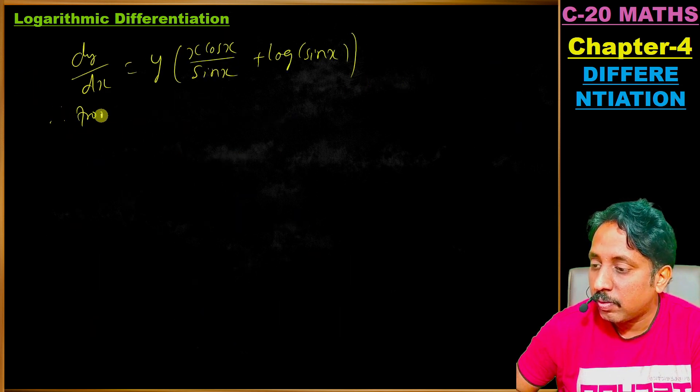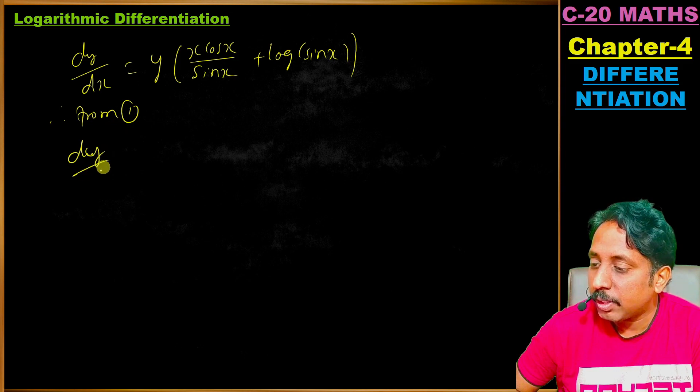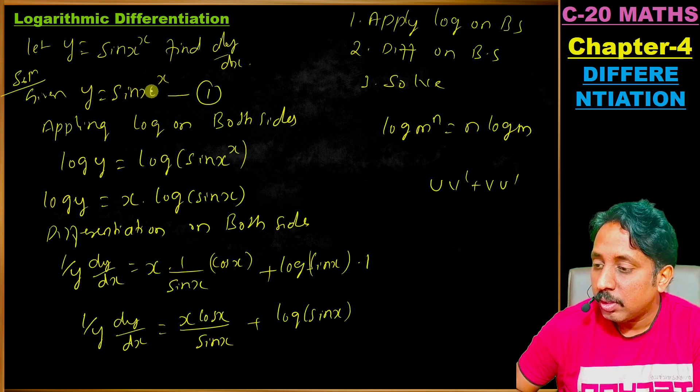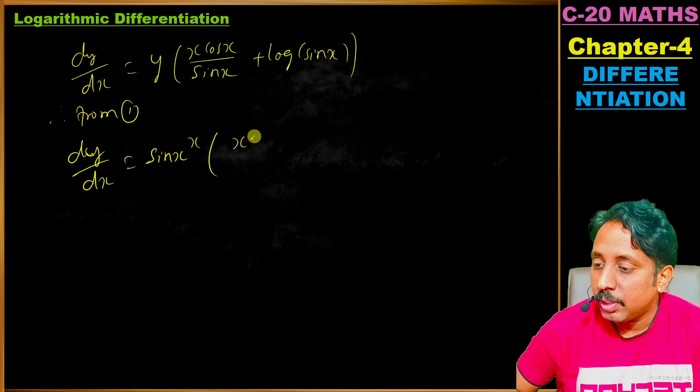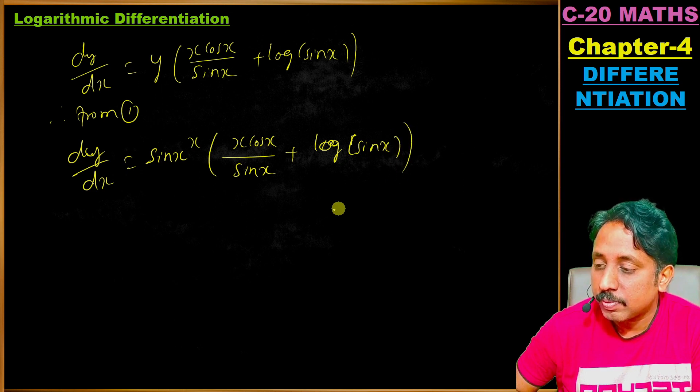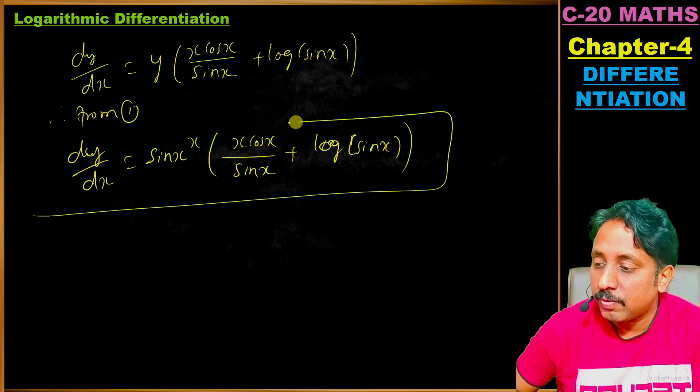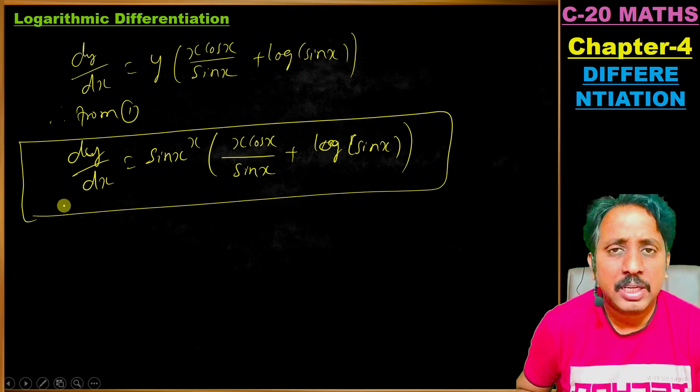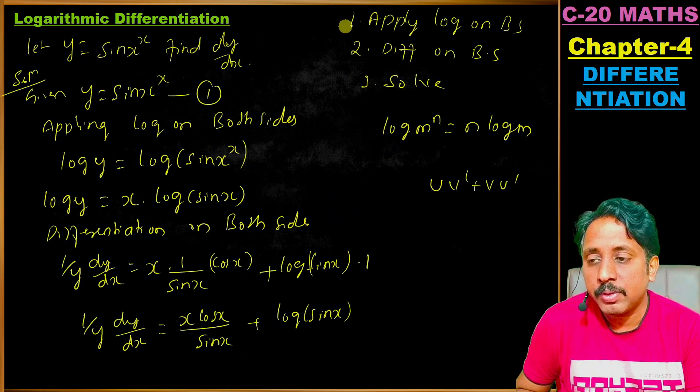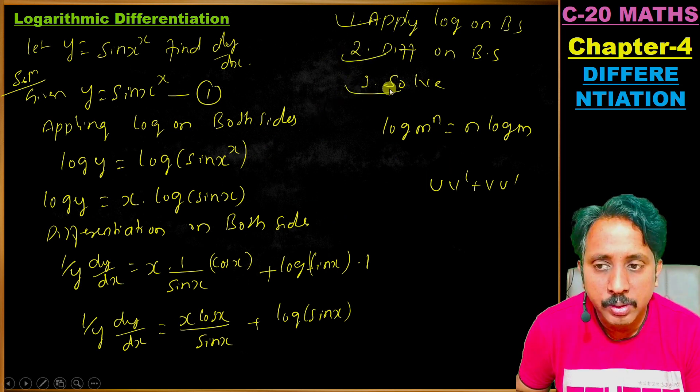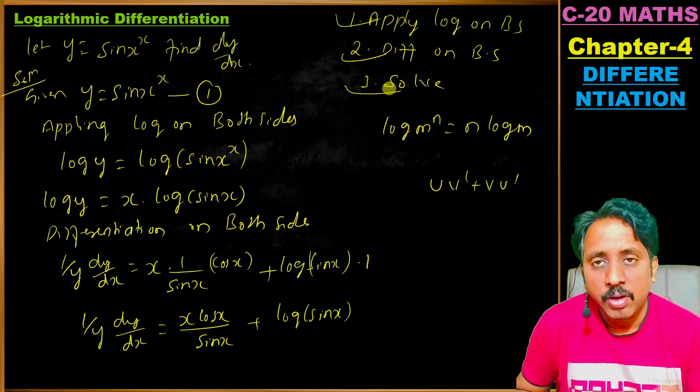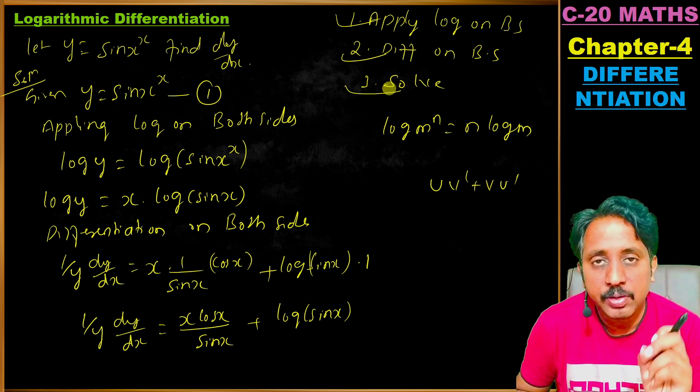From equation 1, y equals sin x to the power of x. Therefore dy by dx equals sin x to the power of x times (x cos x divided by sin x plus log of sin x). This is your final answer. It's very easy - just follow the steps: first take log on both sides, second differentiate, then solve. Thank you.